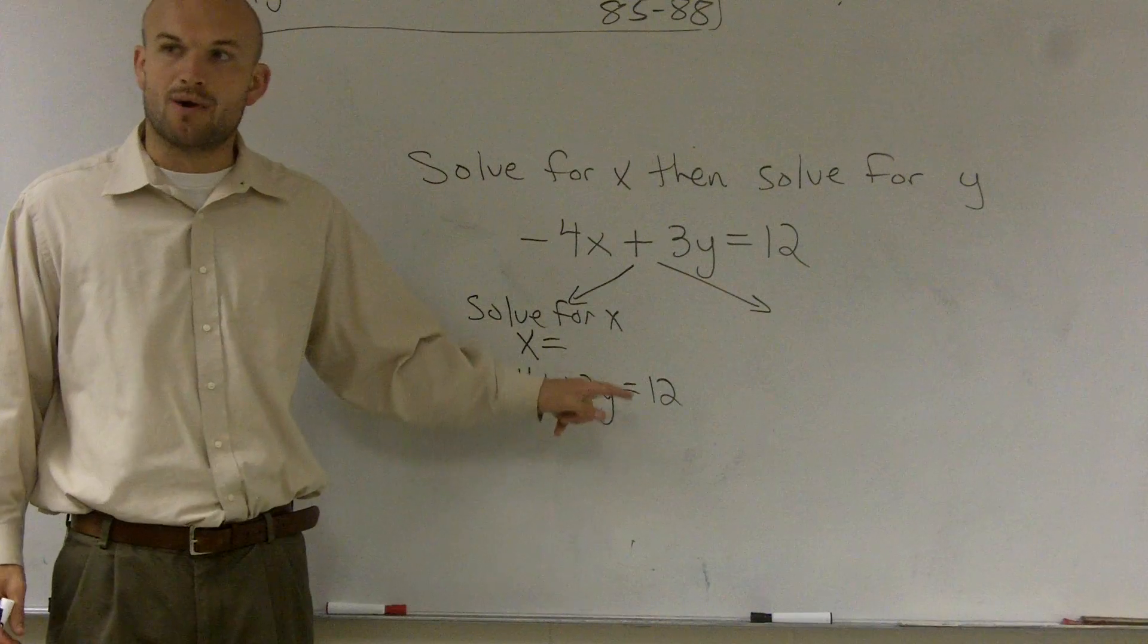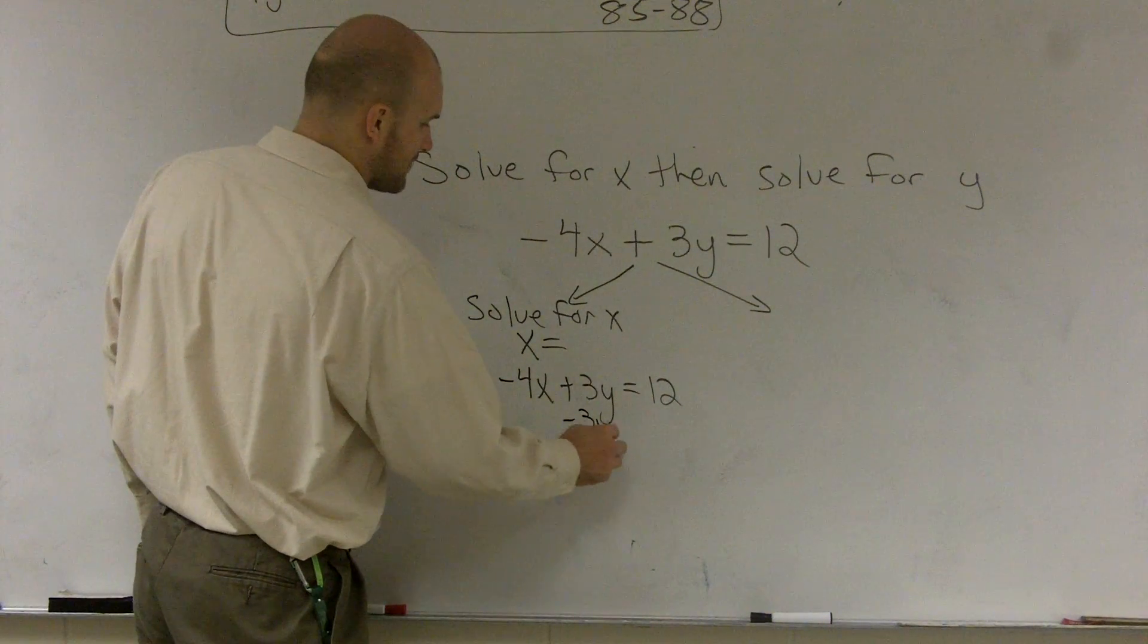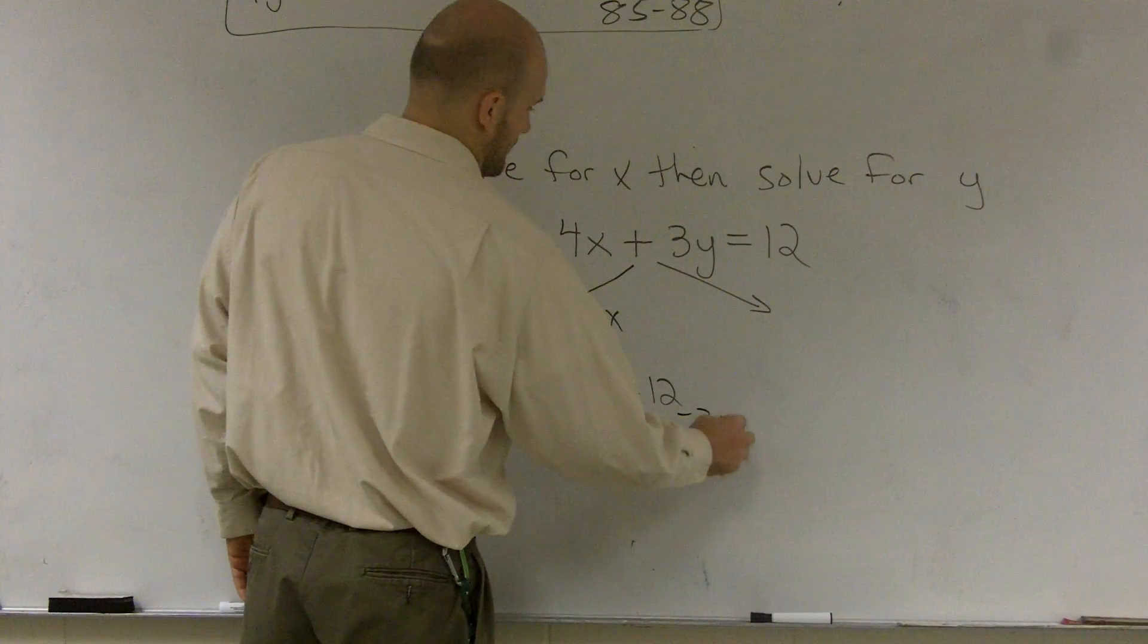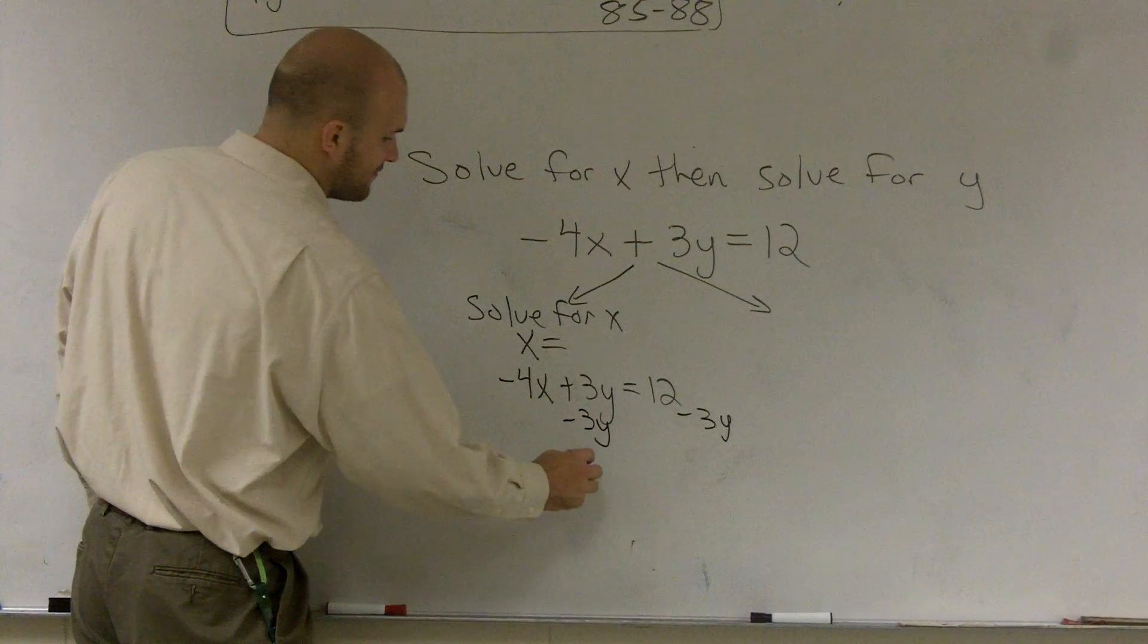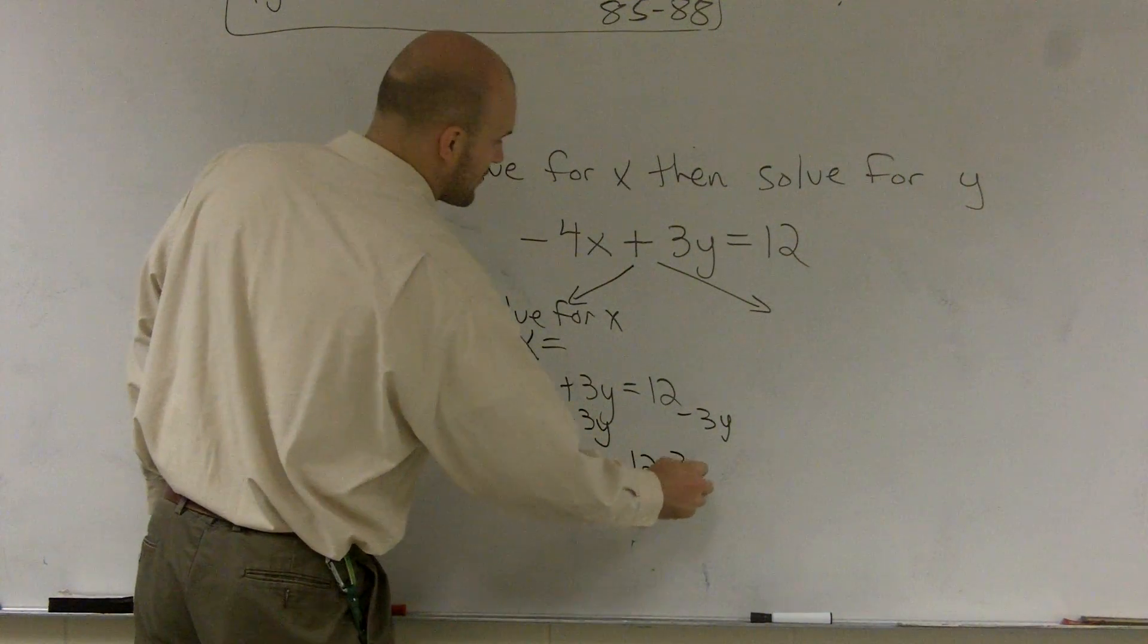Well, it's being added by a 3y. So to undo addition of 3y, I subtract 3y. Therefore, I have negative 4x equals 12 minus 3y.